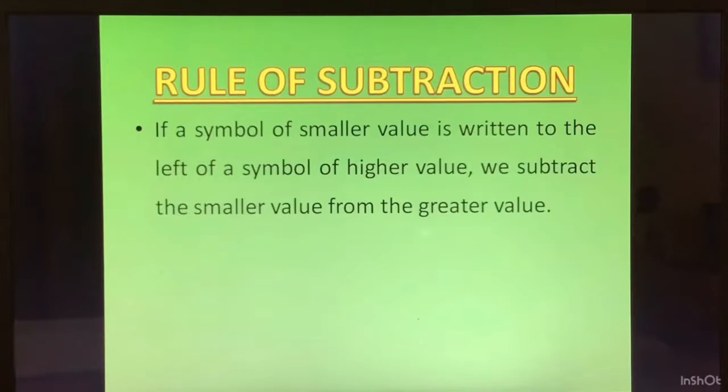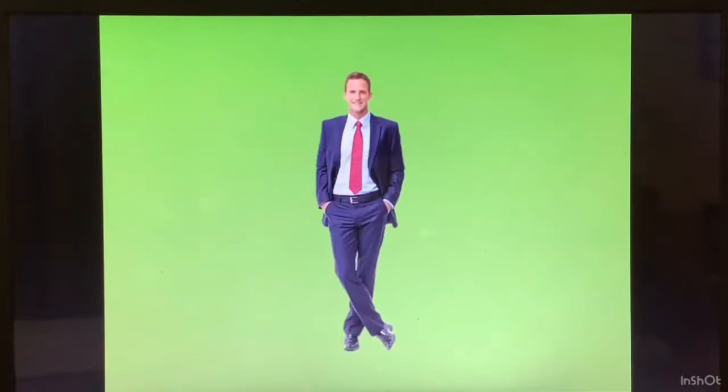The next one: rule of subtraction. If a symbol of smaller value is written to the left of a symbol of higher value, we subtract the smaller value from the greater value. Look at the example: I, X. I is smaller value which is left of the symbol of greater value. Here, the greater value is X. So we will subtract the value of X and I: that is 10 minus 1 which is 9.